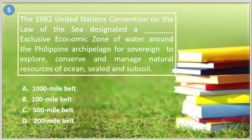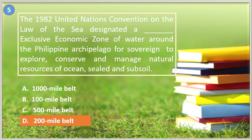Number five. In 1982, the United Nations Convention on the Law of the Sea designated a blank exclusive economic zone of water around the Philippine archipelago for sovereign rights to explore, conserve, and manage natural resources of the ocean, seabed, and subsoil: A. 1000-mile belt, B. 100-mile belt, C. 500-mile belt, D. 200-mile belt. The answer is the 200-mile belt — 200 nautical miles — according to UNCLOS. An island shall generate territorial sea up to 12 nautical miles and an exclusive economic zone up to 200 nautical miles.